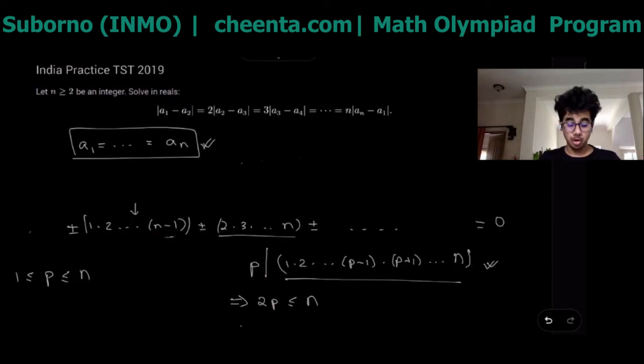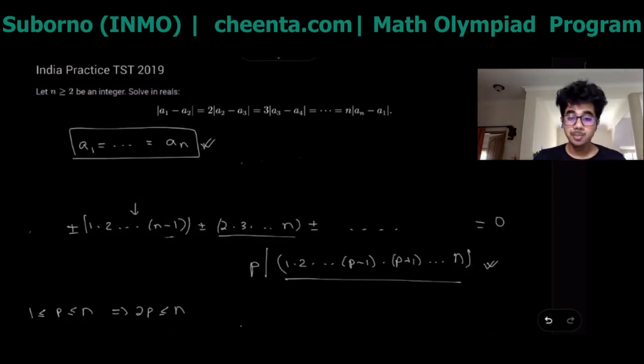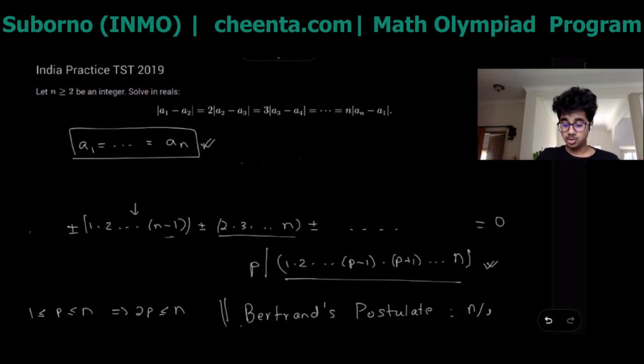This would mean that 2p has to be less than equal to n and this is true for all primes, for all such primes. For every prime between 1 and n it would mean that 2p is less than n. But recall what Bertrand's postulate states. That is the task for you guys in this video: look up what Bertrand's postulate stated. It basically stated that there is always a prime between n over 2 and n.